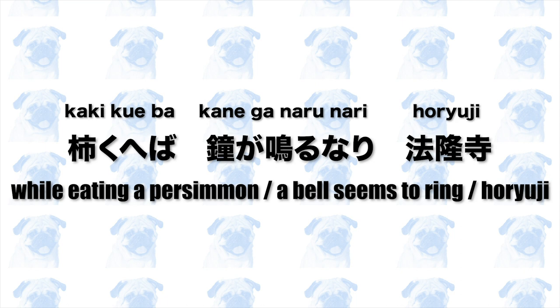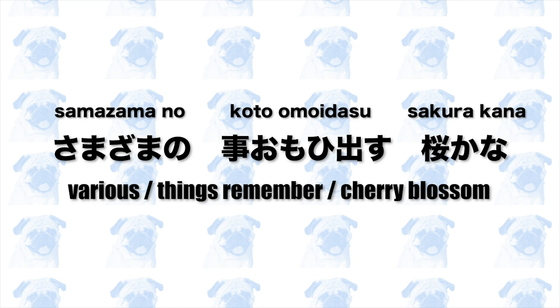The persimmon haiku also does not have one of the eighteen kireji, but nari in kane ga naru nari is in the shushikei or dictionary form, so there would be a full stop after nari. Nari tells us that the sound of the bell seems to be coming from Horyuji. Kaki kueba means 'while eating a persimmon,' so the poet was eating a persimmon when he suddenly heard the bell ring, and this made him think: what a beautiful autumn day. One bonus haiku contains the kireji kana, with the kigo sakura. Looking at the cherry blossom tree reminds the poet of many things from the past, and kana expresses a deep, lingering sense of nostalgia that the tree evokes.